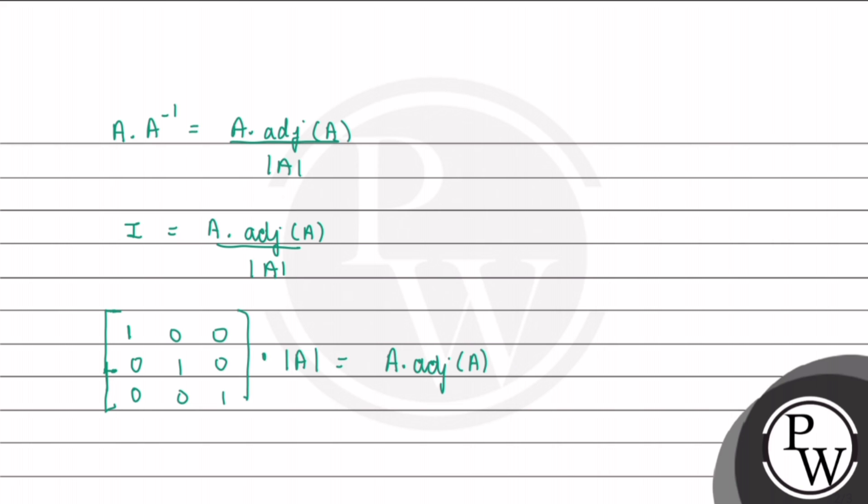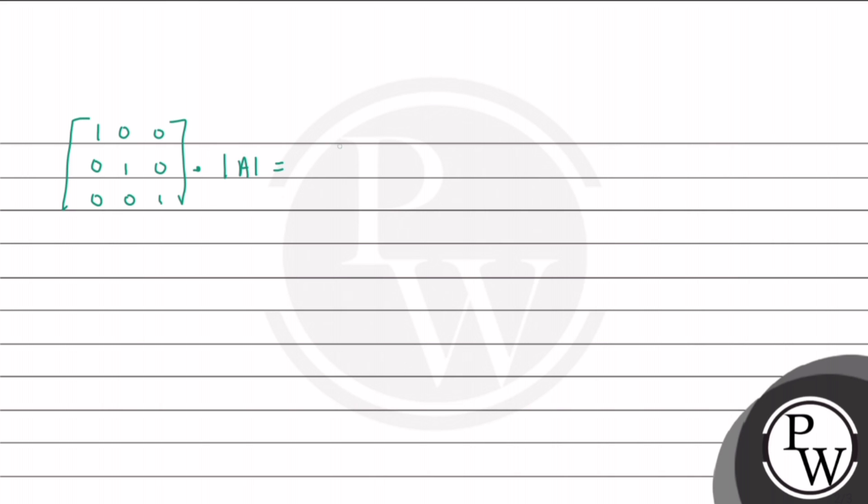We will have A into adjoint of A equal to the given matrix: [-2, 0, 0; 0, -2, 0; 0, 0, -2].